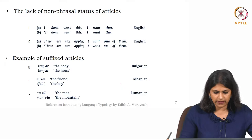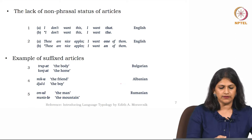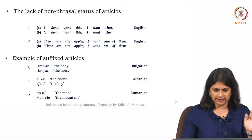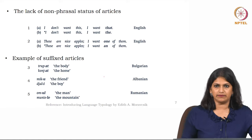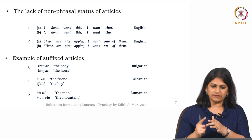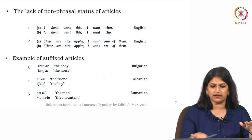In the case of suffixed articles, look at languages like Bulgarian, Albanian, and Romanian. For example, 'troop-at' means 'the body,' 'konz-at' means 'the horse,' 'mik-u' in Albanian means 'the friend,' 'zal-i' means 'the boy.' So the suffixes -u, -i, -at are affixes which work like articles. There are two different types of articles cross-linguistically: definite and indefinite. Sometimes definite articles are manifested as suffixes. English is one type; Bulgarian, Albanian, and Romanian are the other type.